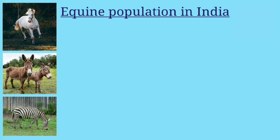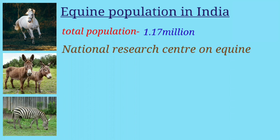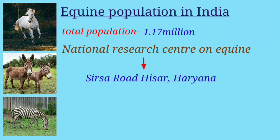Regarding equine population in India, as per the 19th livestock census of 2012, the total population of horses, ponies, donkeys, and mules is 1.17 million. The National Research Center on Equines is located on Sirsa Road, Hisar, in Haryana.